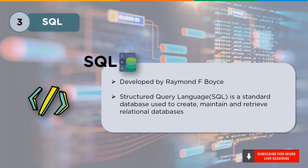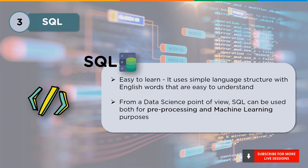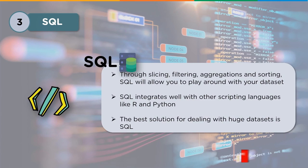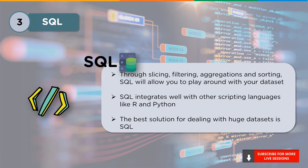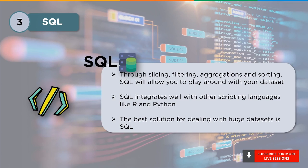SQL is easy to understand with its simple syntax and English-like commands. From a data science perspective, SQL is used for pre-processing and machine learning purposes. About 2.5 quintillion bytes of data is generated every day, and in order to store such large amounts of data, it is strictly necessary to make use of databases — SQL is best suited for this. With features like slicing, filtering, aggregation, and sorting, SQL allows you to handle large amounts of data. It also integrates well with other programming languages like Python and R.